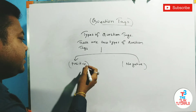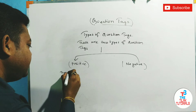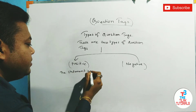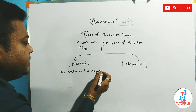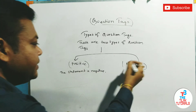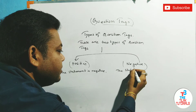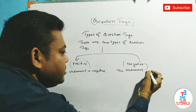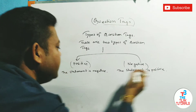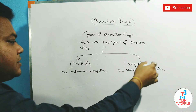In case of positive question tags, the statement is negative. In case of negative question tags, the statement is positive. So to summarize: for a positive question tag the statement is negative, and for a negative question tag the statement is positive.